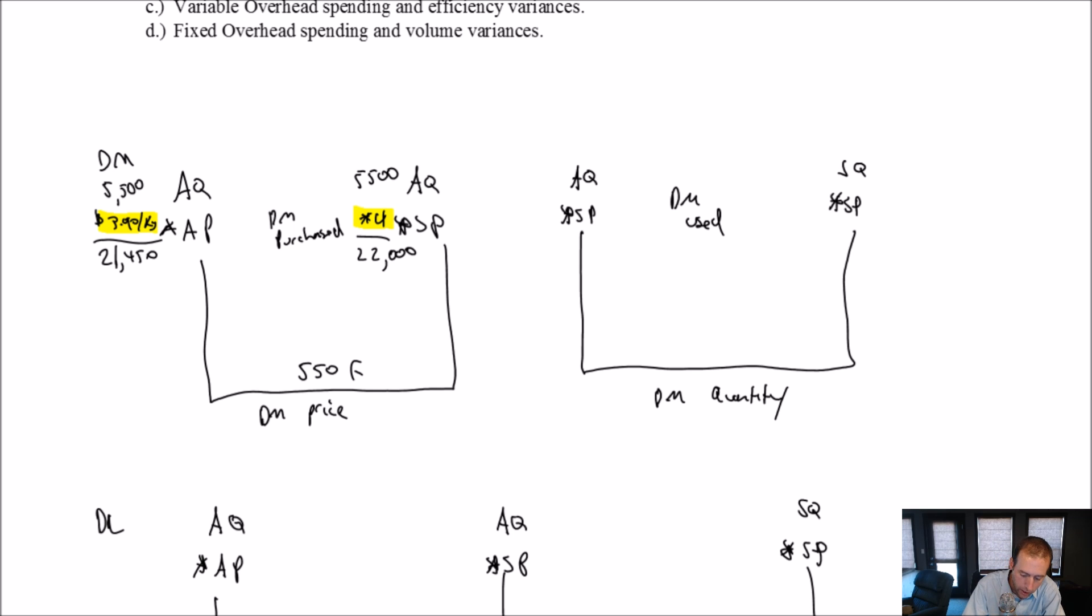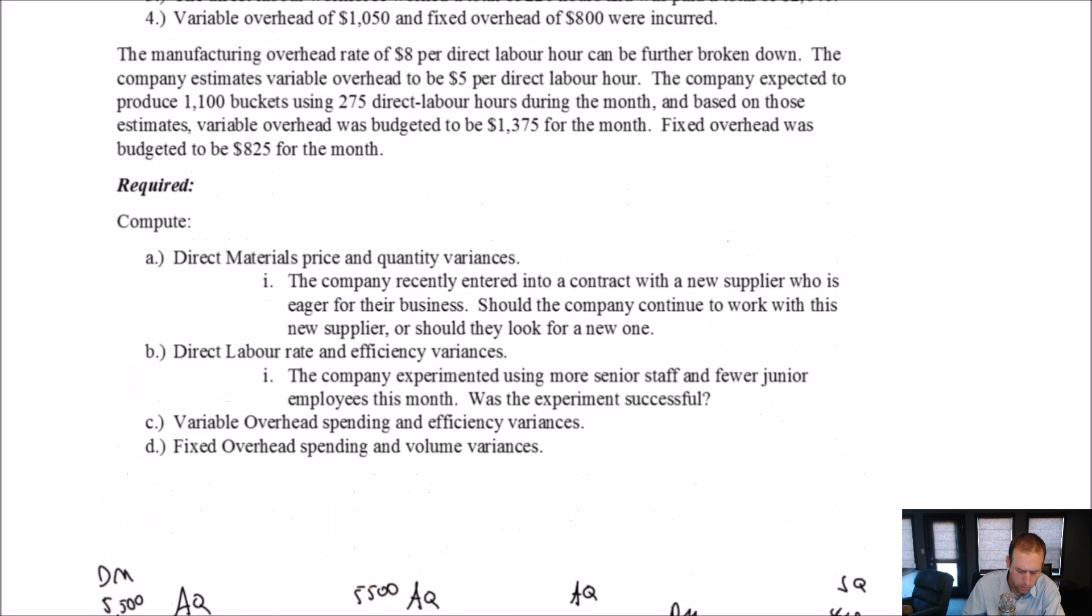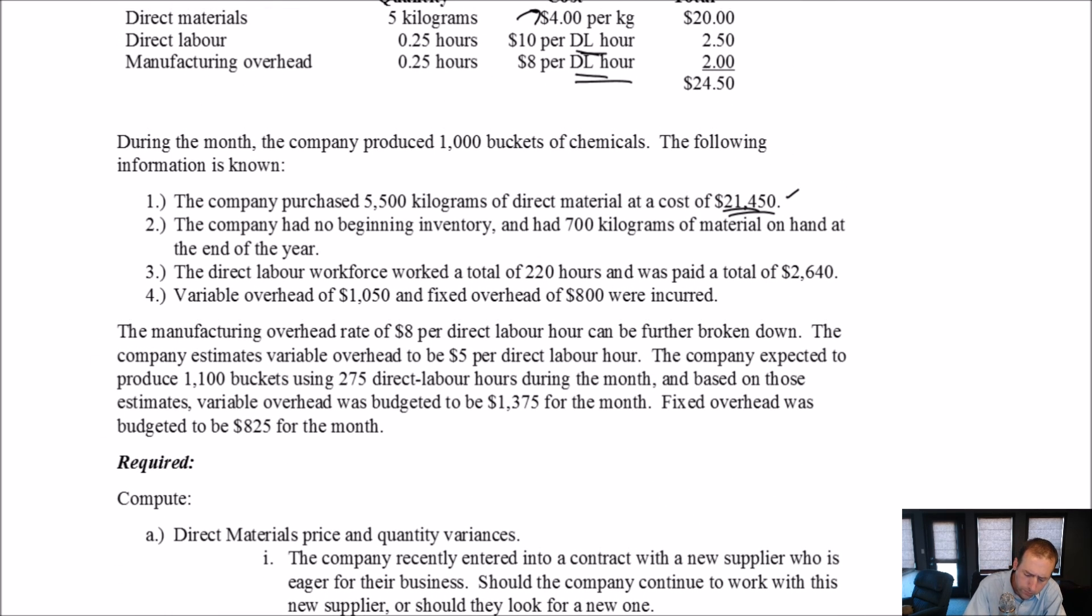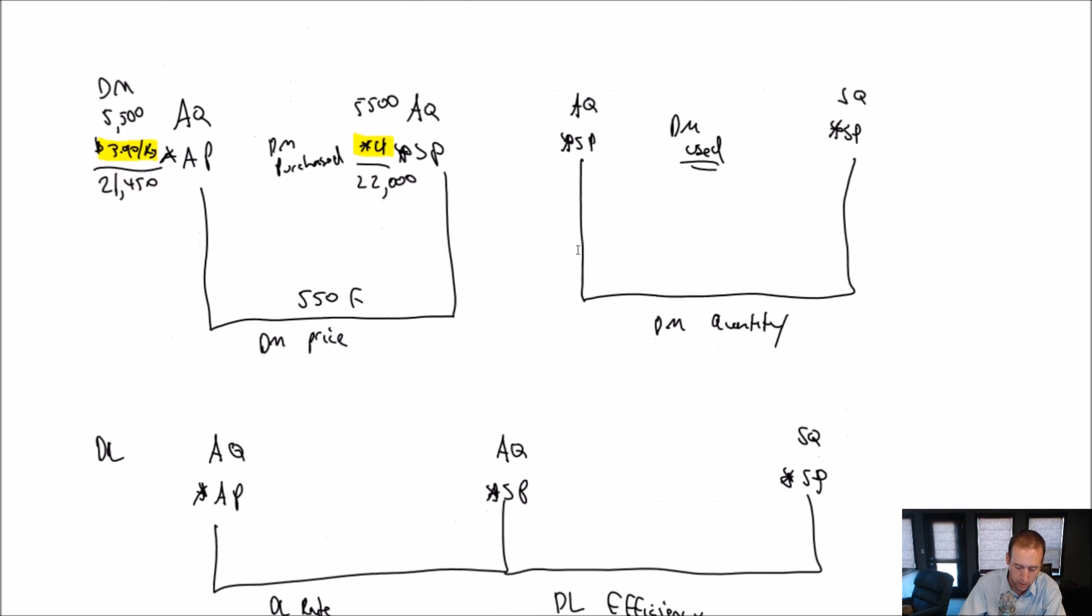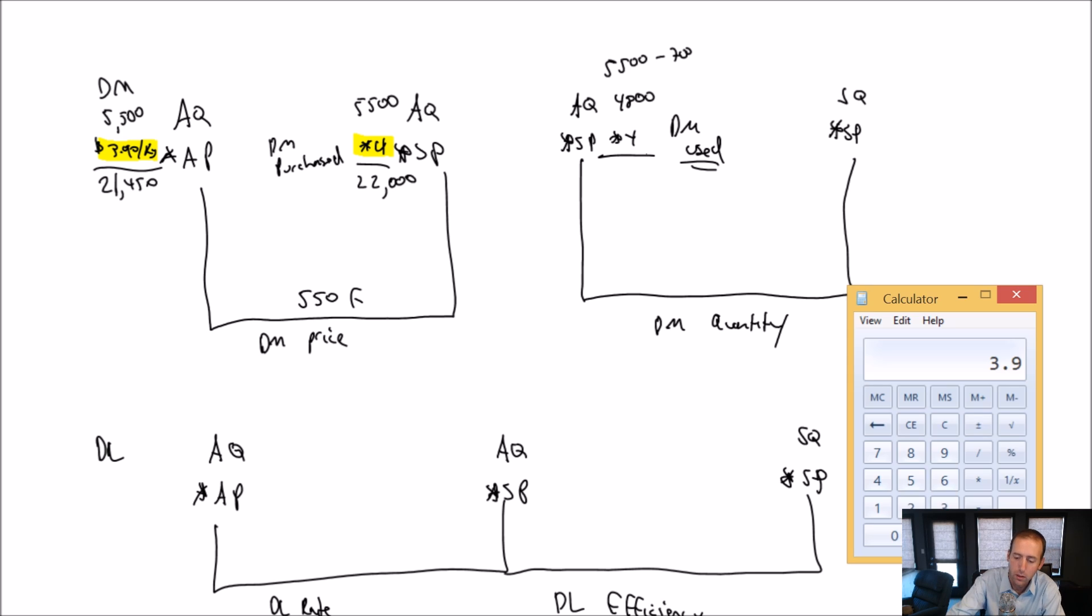Moving over to AQSP, oh, for direct materials used, rather. Did we use the same amount as we purchased? Well, reading number two, this is where we get at how much we used. The company had no beginning inventory and had 700 kilograms of material on hand at the end of the year. So we purchased 5,500. We had nothing to begin with. We had 700 kilograms left over. We must not have used all that we purchased, right? If we had no kilograms left over, then we used all that we purchased, but we must not have used all of the material we purchased. We must have only used 4,800 kilograms.